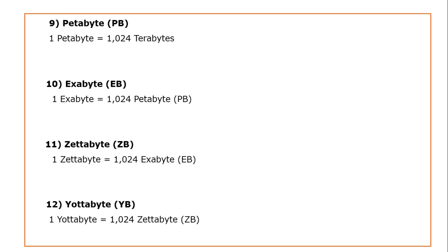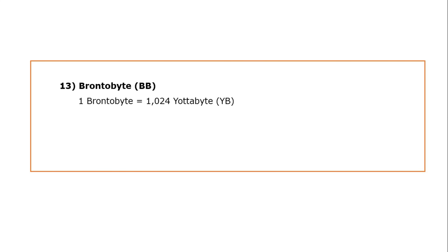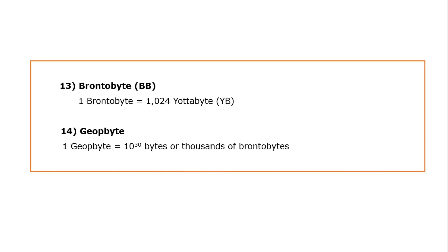Next one is a yottabyte, that is YB — 1 yottabyte is equal to 1024 zettabytes. The next one is brontobyte, that is BB — 1 brontobyte is equal to 1024 yottabytes. And the last one is a geopbyte, so 1 geopbyte is equal to 10 to the power of 30 bytes, or thousands of brontobytes. This is the last memory unit.